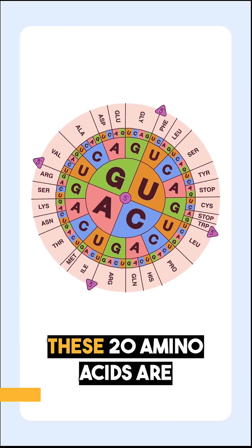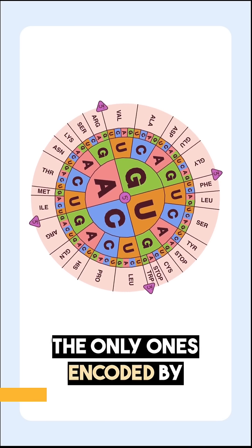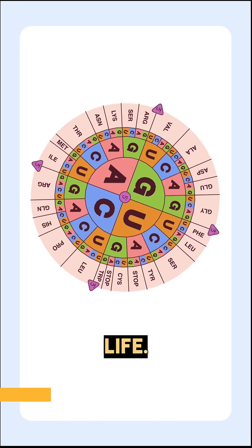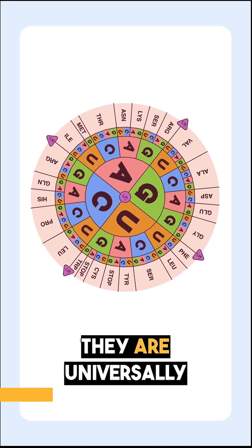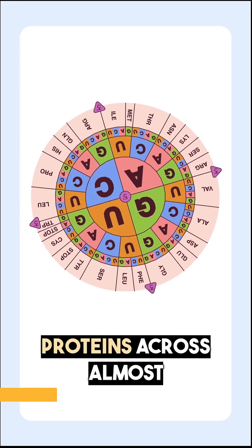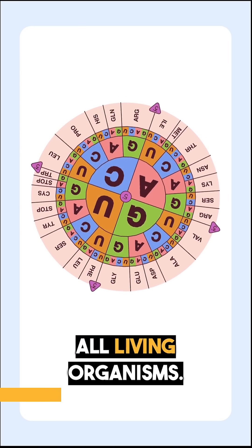These 20 amino acids are the only ones encoded by the genetic code of life. They are universally used in the synthesis of proteins across almost all living organisms.